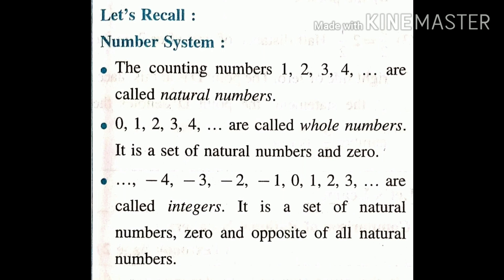The first type of number system is natural numbers. The counting numbers 1, 2, 3, 4, and so on up to infinity are called natural numbers. It means natural numbers are starting from 1. All positive numbers are natural numbers.